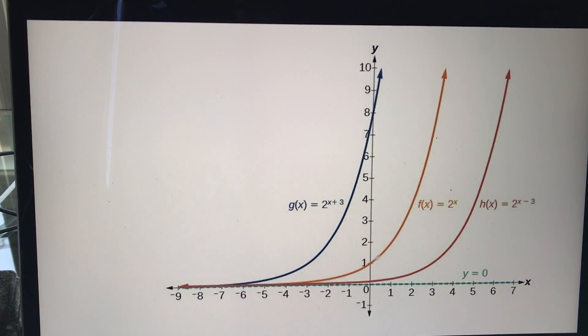This one's a horizontal shift. So here's my original (0, 1). This is plus 3. So it goes left 3, 1, 2, 3. Okay, we see it sitting there. We can label it (negative 3, 1).